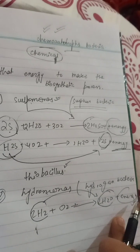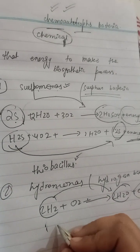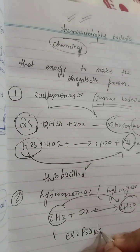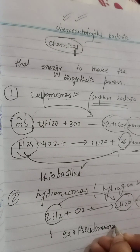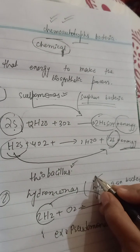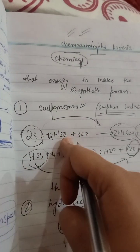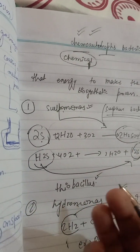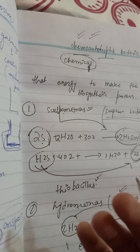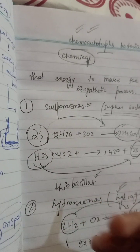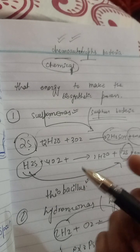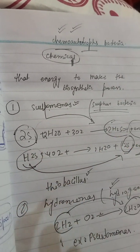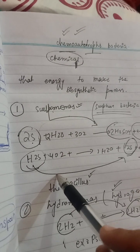An example of a hydrogen bacterium is Pseudomonas. That covers Sulfomonas and Hydromonas. We also have four more types: Ferromonas, Nitromonas, carbon bacteria, and methane bacteria, which will be discussed in the next video as part two of chemo autotroph bacteria.